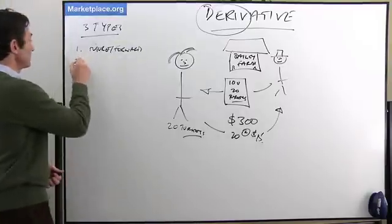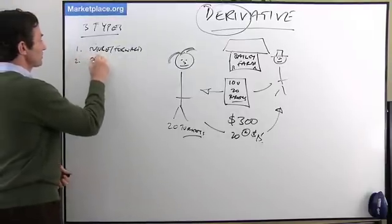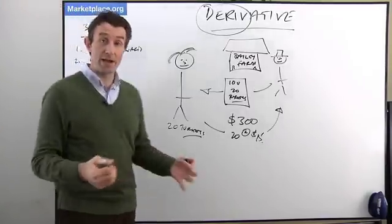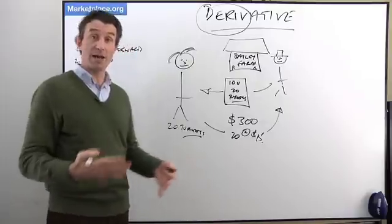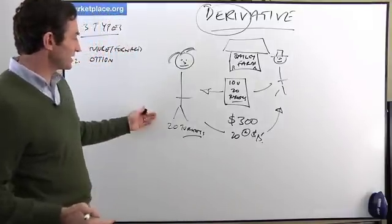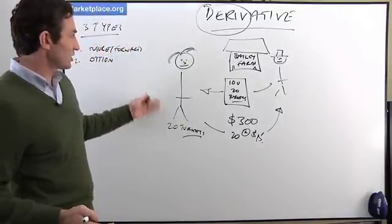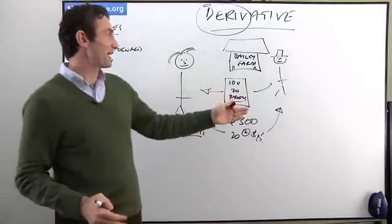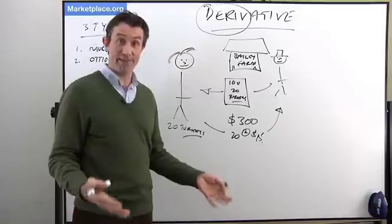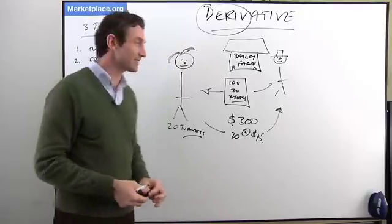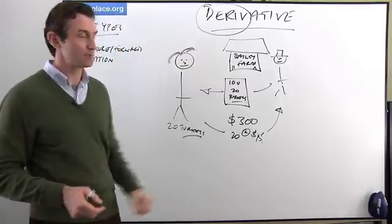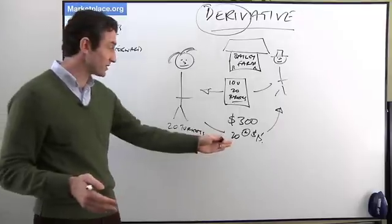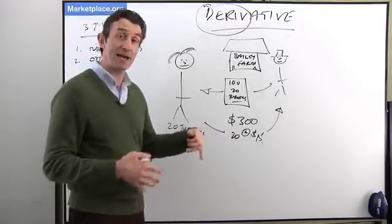The second type is called an option. An option gives the buyer the option to buy or sell something. In this case, Terry is a little worried about Mr. Bailey — he's worried that Mr. Bailey's farm might fail. It's a very small chance, of course, but it's possible. So he thinks, what I'll do is I'll hedge this contract by taking out an option.